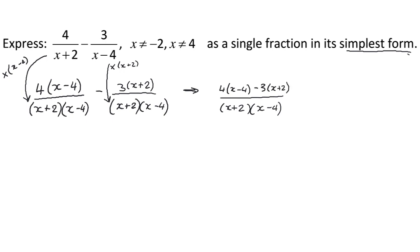Again, it says simplest form. The numerator isn't in its simplest form, so I need to expand those brackets. So I'll get 4x subtract 16, because I'm using my knowledge of expanding brackets. Subtract 3x subtract 6, all over x plus 2, x minus 4.